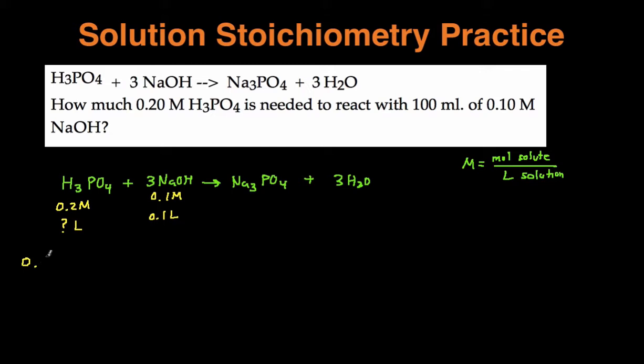So let's start with this part. We have 0.1 liters of the NaOH. So we're starting with the given and then we're going to multiply that by the molarity.